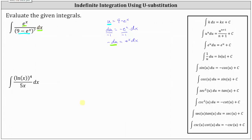Writing the integral in terms of u: e to the x dx is equal to negative du, so let's factor out the negative. Because u equals 9 minus e to the x, the integral function is now just 1 divided by u to the 7th. To apply the power rule of integration, we write 1 divided by u to the 7th as u to the power of negative 7.